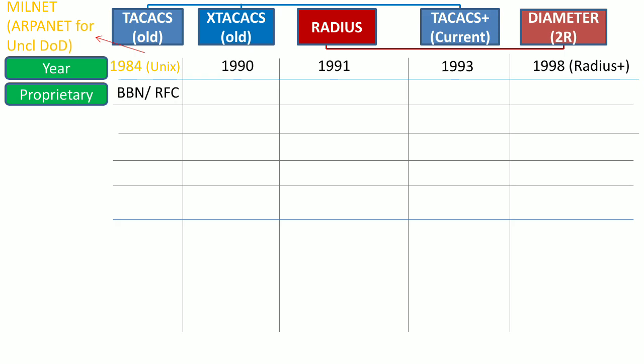TACACS was introduced by BBN Technologies and was a proprietary protocol, though an RFC was also published. XTACACS and TACACS+ were formulated by Cisco and are both proprietary protocols, but an RFC was also published by one employee in 1993. RADIUS is an open Internet Engineering Task Force standard, formulated by Livingston. Diameter is also open. So the TACACS series are proprietary protocols, whereas RADIUS and Diameter are open protocols.